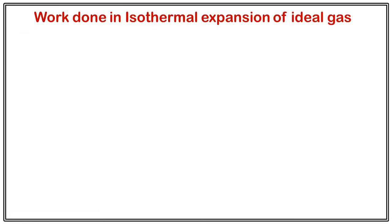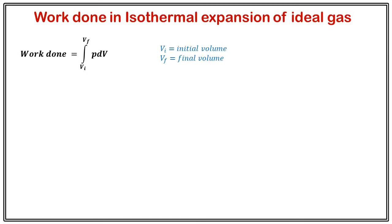We will begin with work done in isothermal expansion or isothermal compression of an ideal gas. Isothermal means temperature remains constant throughout the process. For a hydrostatic system, work done equals pressure times change in volume, and if volume changes from Vi to Vf, then total work done is the integration over Vi to Vf of p dV.